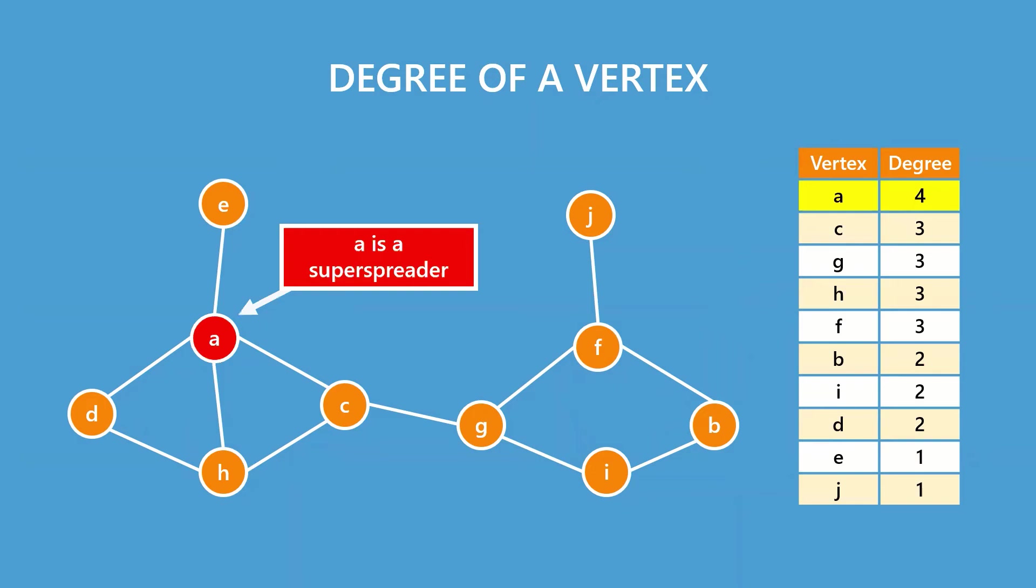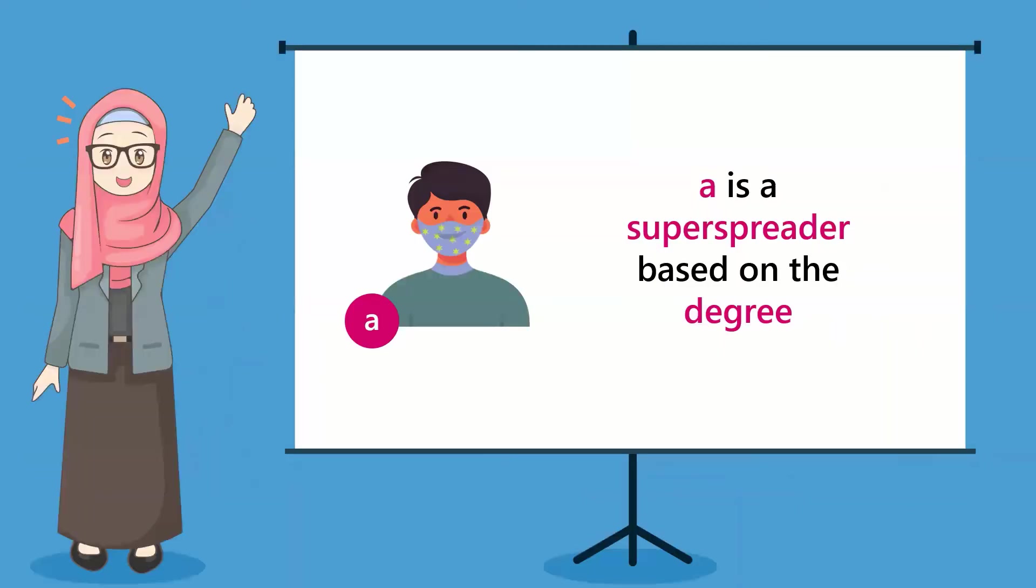And when we rank by degree, A is number 1. Therefore, we can say that A is a super spreader when we use degree.